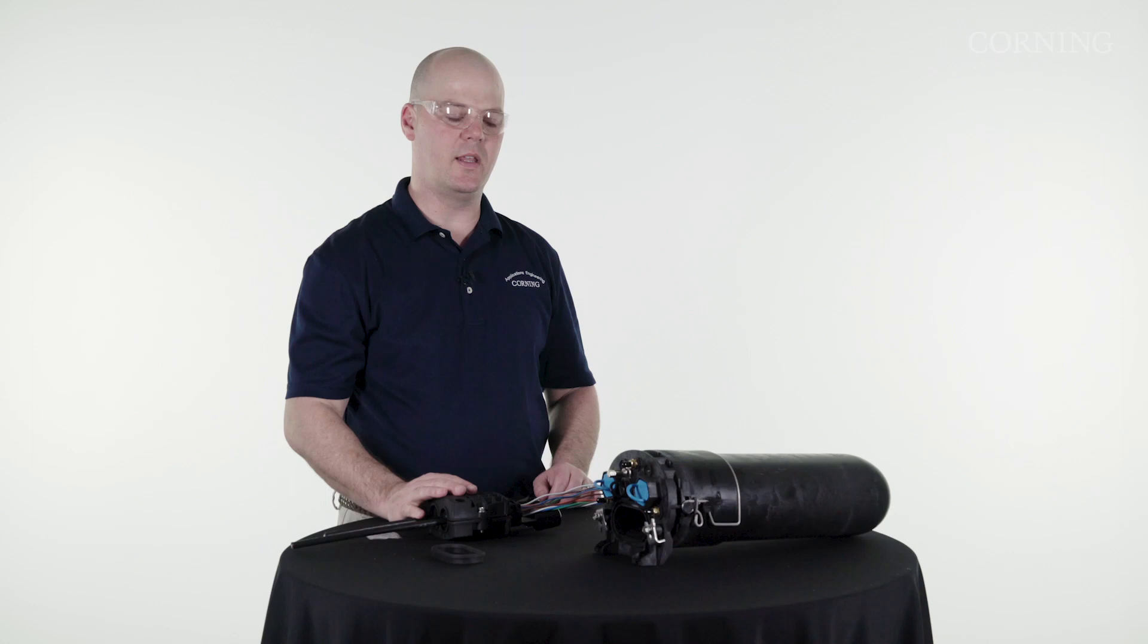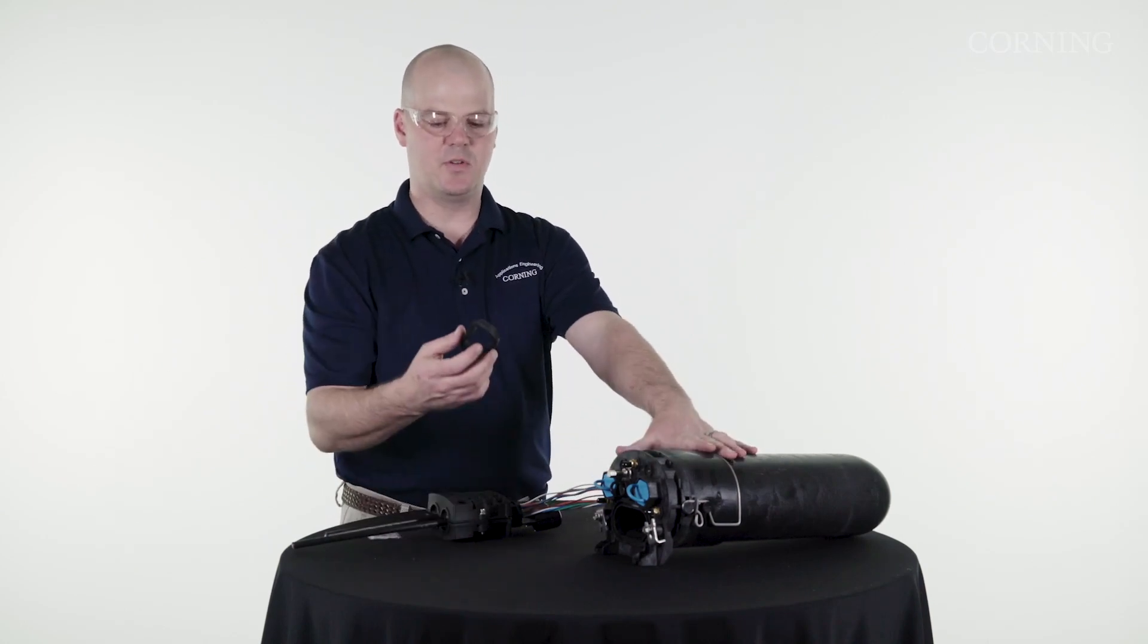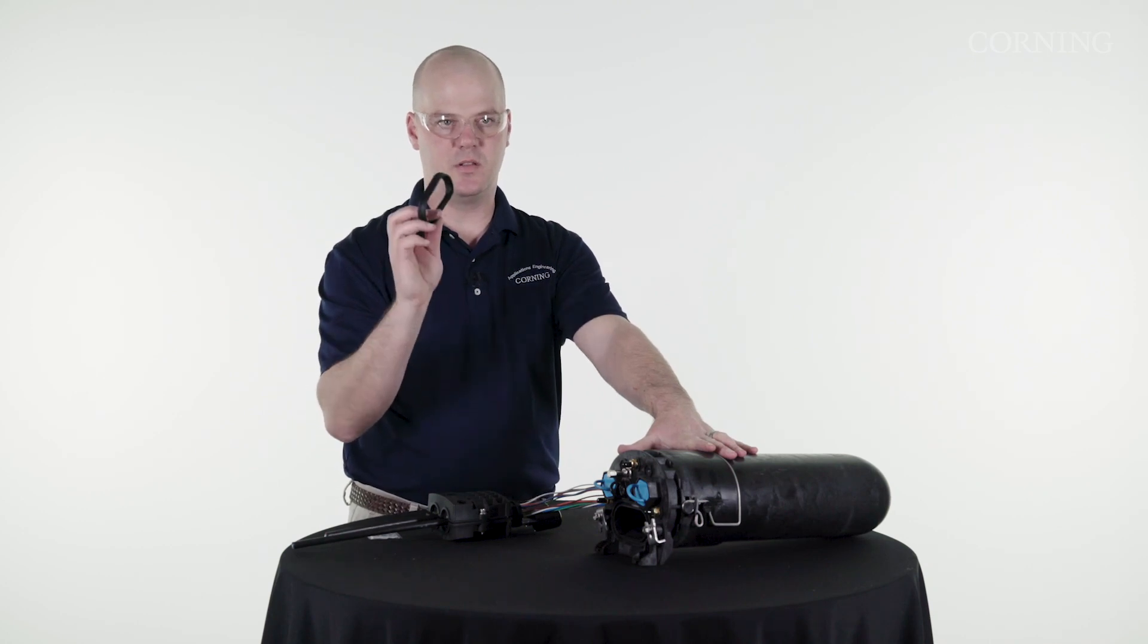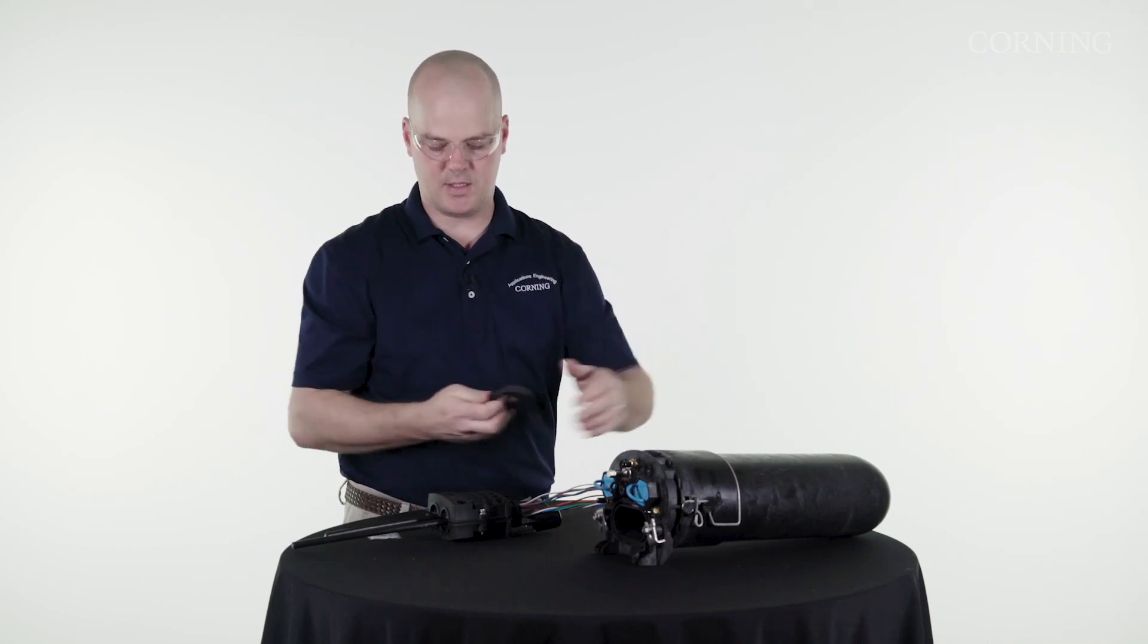Now that we've assembled our double e-cam, I want to go ahead and put it into the closure. First thing I want to do is put some silicone on this seal, put it into the closure and then I can slide this in here.